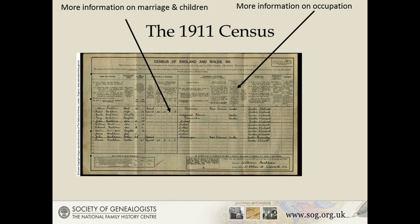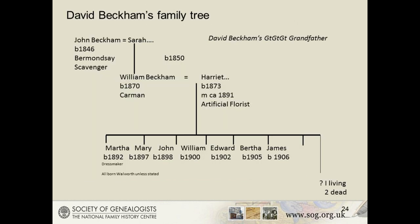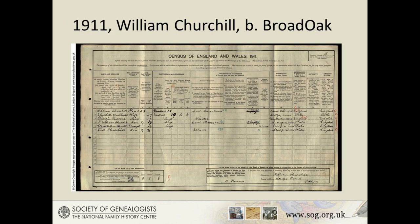A useful way to represent the information and make sense of it is to construct a pedigree or family tree of each person placed on their appropriate generation level based on what the census tells you. It's absolutely vital to follow the family back in each census. Here we see my grandfather, Prothero Churchill, aged 17, in 1911, living in the Welsh mining town of Tredegar, with his parents William and Elizabeth Anne and some siblings, and a cousin — or rather someone described as a niece of his father.